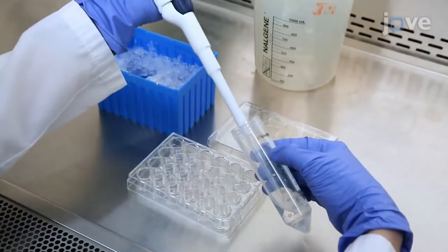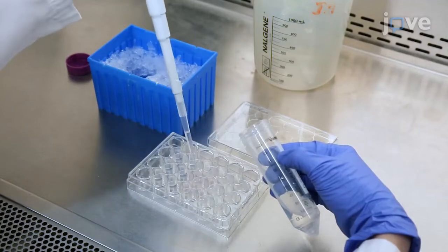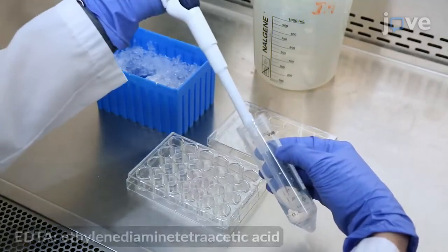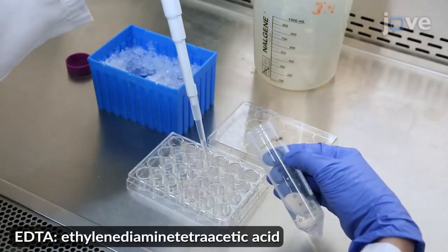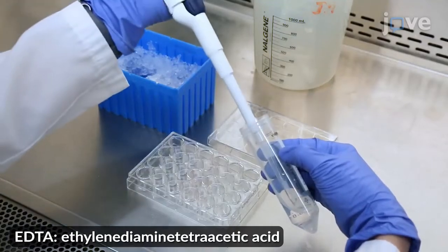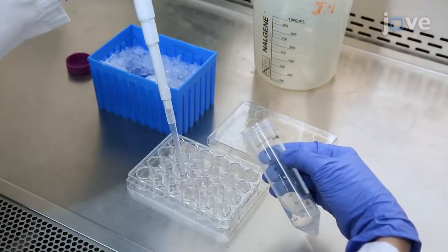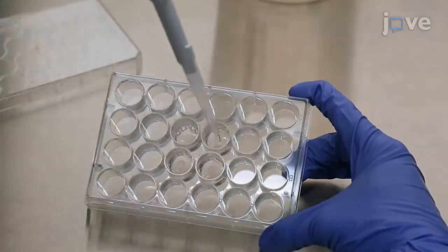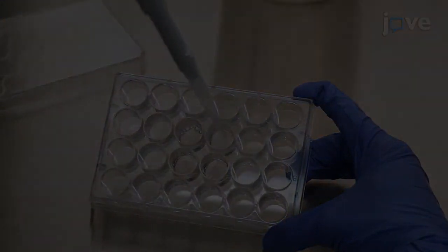To break up the ECM, add 500 microliters of ice-cold 0.5 millimolar EDTA to each well containing ileal enteroids suspended in ECM. Pipette up and down vigorously with a P1000 pipetter set at 500 microliters.